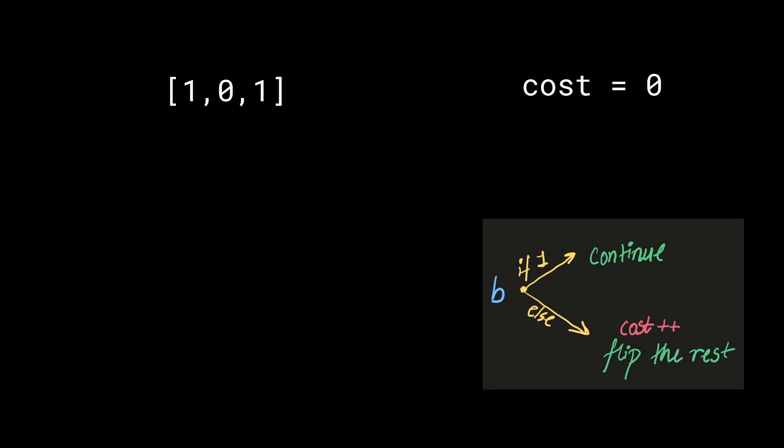We will also set the initial cost to 0. We'll say that this cost is going to keep track of the number of flips or the number of switches that we require to convert everything to 1s. On the bottom right-hand side is the logic we are going to use which is already mentioned in the question. The question says that if the bulb is on, well, that's great, we'll just continue on. But if the bulb is 0, that is, if the current bit we are looking at is 0, then we have to increase the cost by 1 and flip everything on the right-hand side of it.